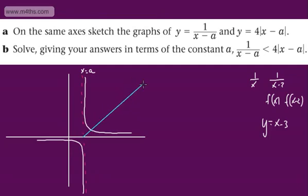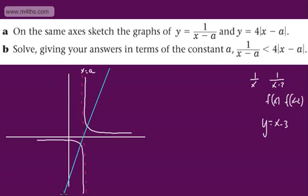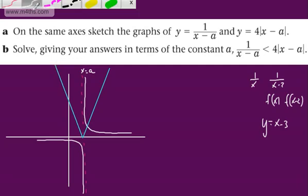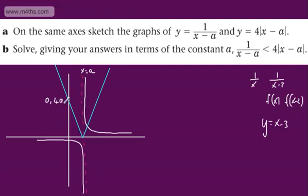With a gradient of 4 — it used to come down here and this point would have been -4a. Because it's a modulus function, it's bounced back up off the x-axis. So the point at x = 0 is now (0, 4a), and the vertex is at (a, 0).